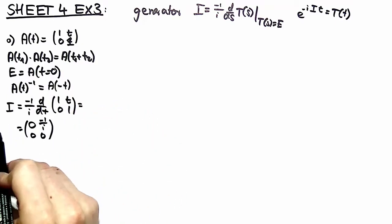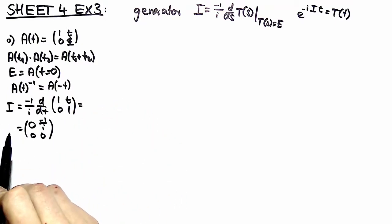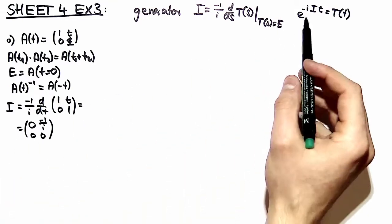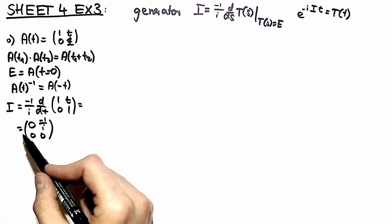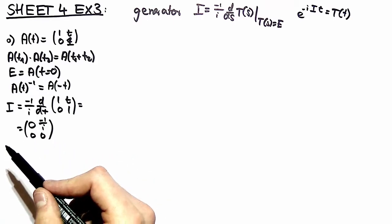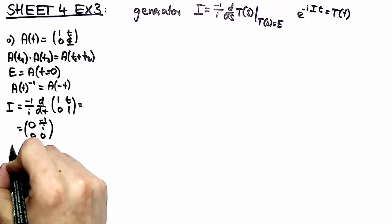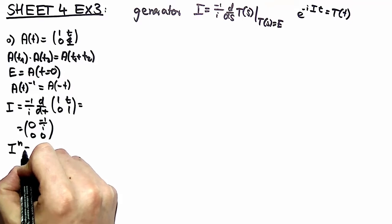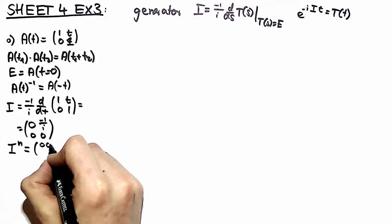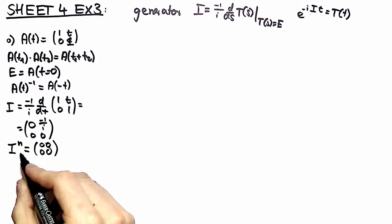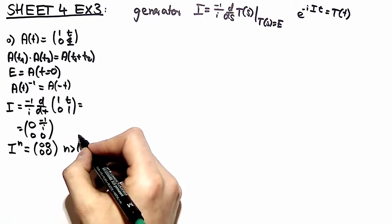And when validating that this is indeed the generator of the group we have to take the exponential of this generator. When taking the exponential we have to Taylor expand it and we have to compute powers of i. So the most important observation right here is that this matrix is nilpotent and we get a 0 matrix for all powers greater than 1.